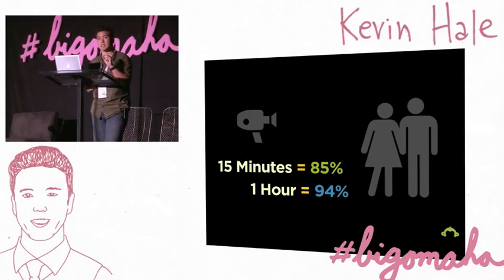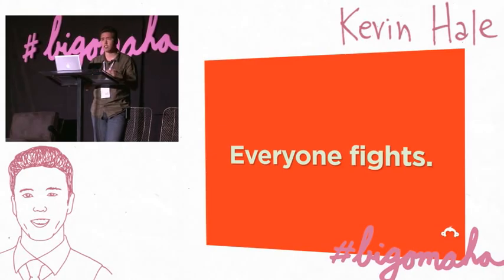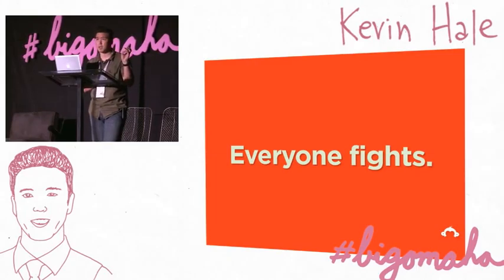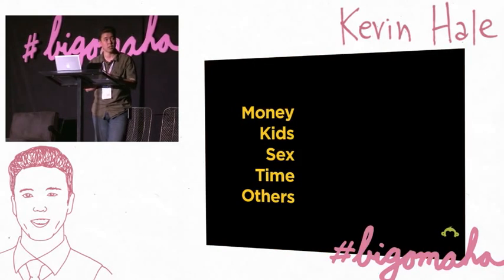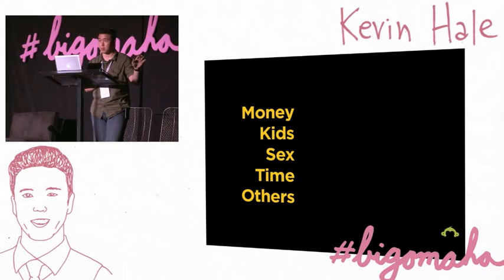Gottman found something fundamental in how we resolve conflicts that determines the longevity of relationships. It's not that successful married couples never fight — it turns out everybody fights, and we all fight about the exact same things: money, kids, sex, time, and other — things like jealousy and in-laws. In a web startup you can match all customer support one-to-one with these issues. Cost and billing are obvious. If you build a tool that helps people interact with clients, anything that happens to those clients makes people very sensitive. Performance is about uptime and speed.